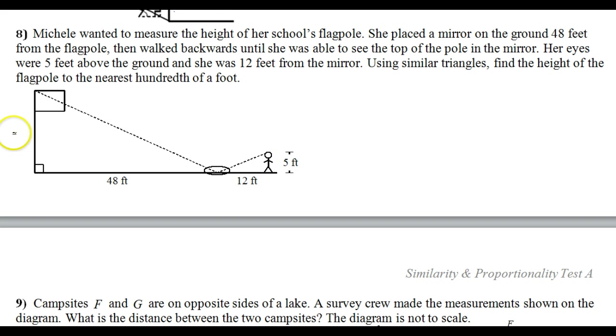So, of course, the height of the flagpole would be right here. Okay. Corresponding sides. These sides would be corresponding for both triangles. And these would be corresponding for both triangles. So let's go. Let's do green over green equals pink over pink.